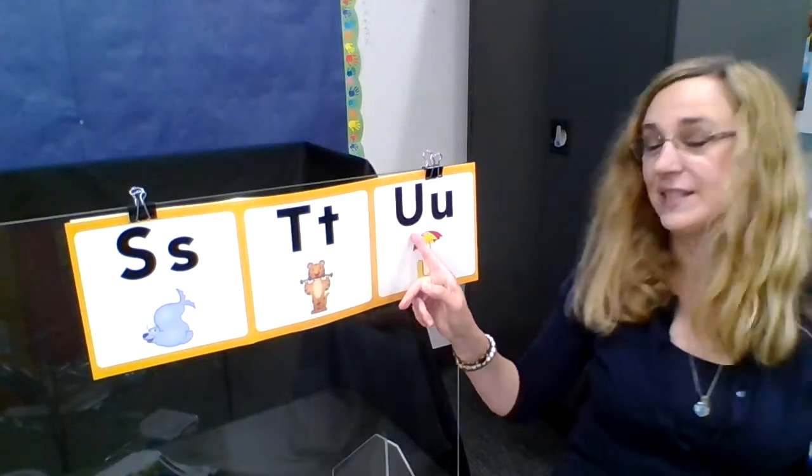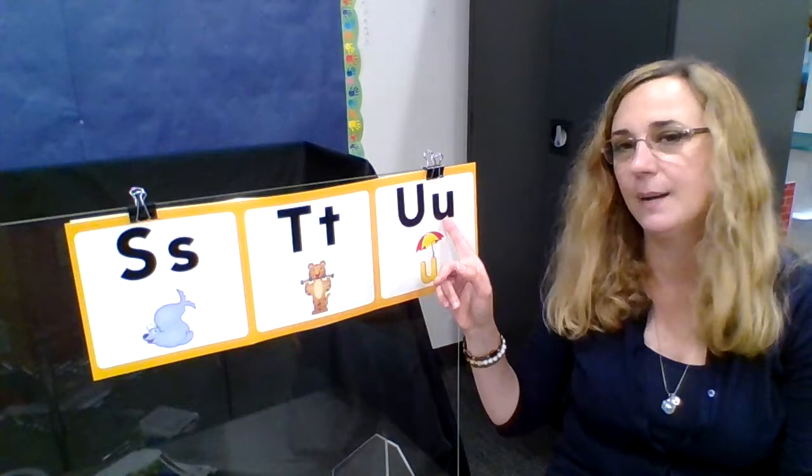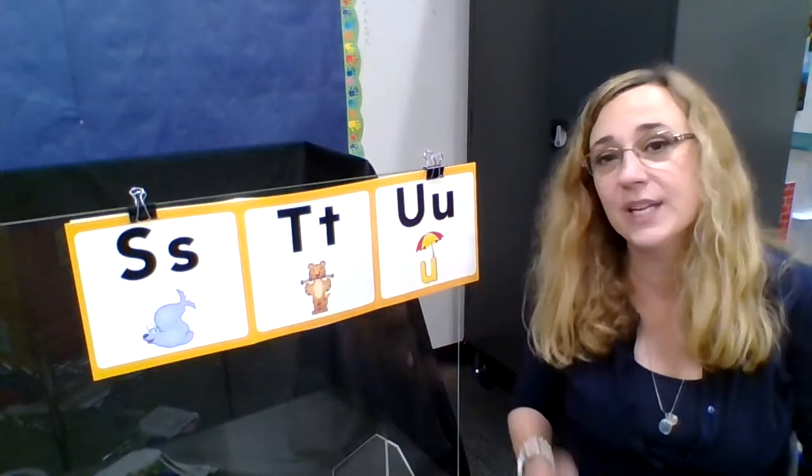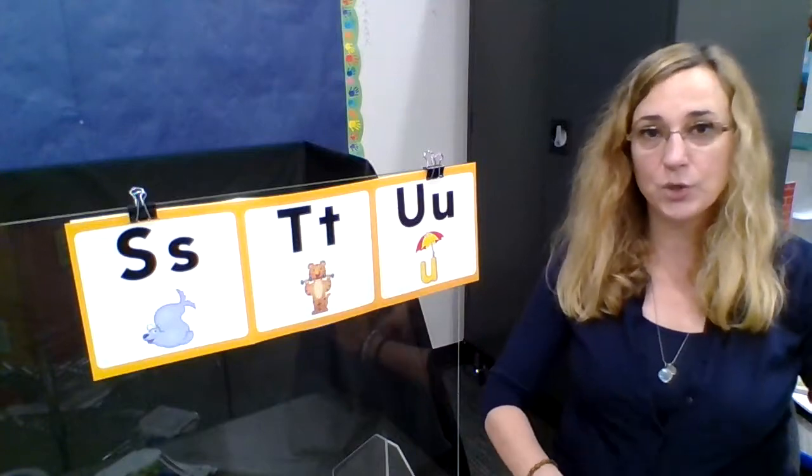So that's a vowel. Uh, uh, umby. Uh, uh, umby umbrella. You can also say its name sometimes like you, you, you, you, you, you.